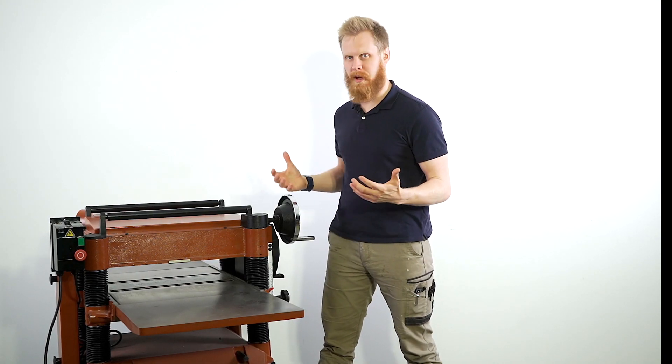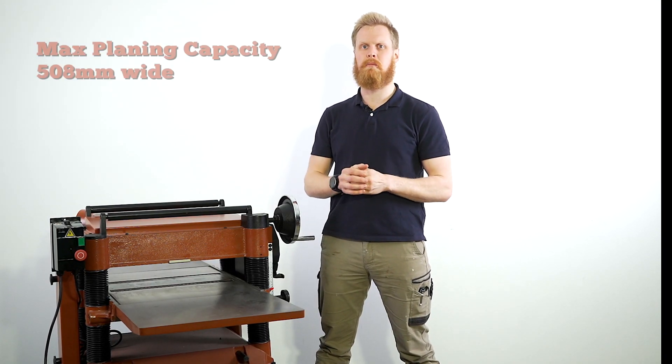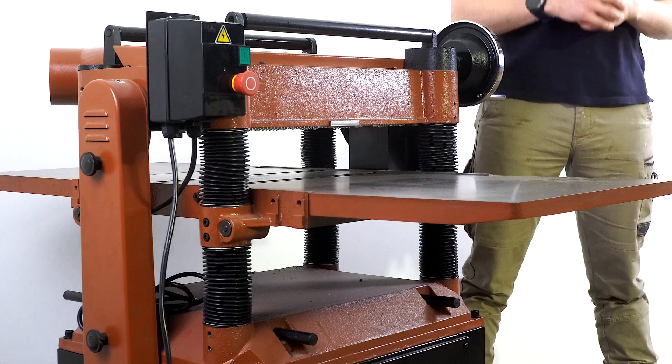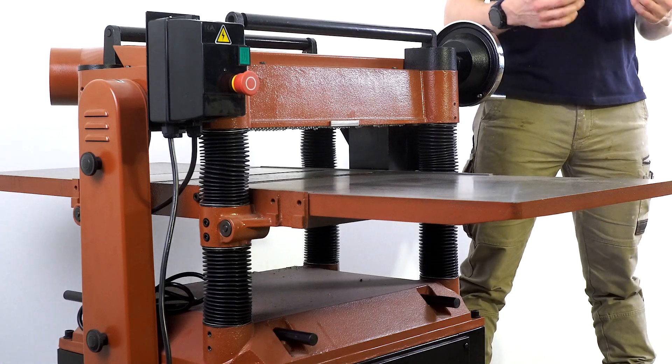So, the max planing capacity on this absolute monstrosity is 508mm wide and 203mm tall. It will feed through anywhere between 4.8 to 6 lineal metres a minute, but again, that varies depending on the amount of material you're taking off and the hardness of the timber that you're working with.